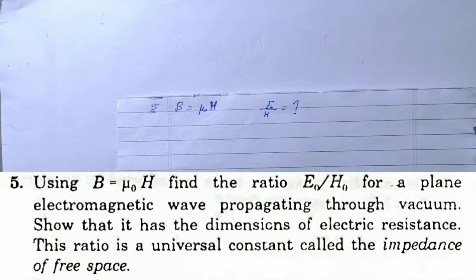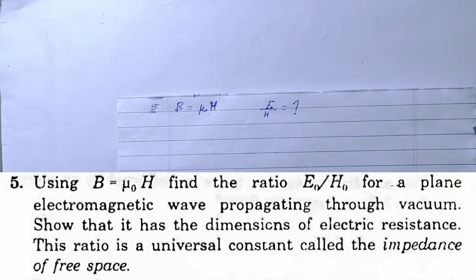This is one more solution from Chapter 40, electromagnetic waves, question number five. Using B equal to mu into H, find the ratio of E0 by H0 for a plane electromagnetic wave propagating through vacuum. Show that it has the dimension of electric resistance. This ratio is a universal constant called impedance of free space.